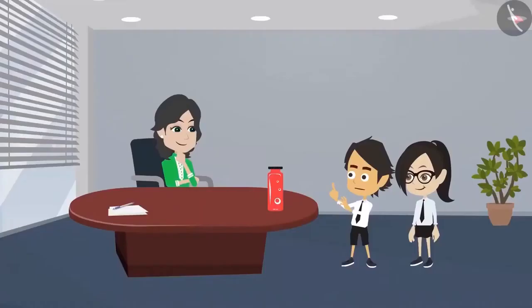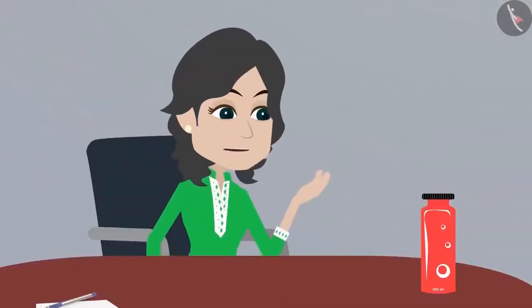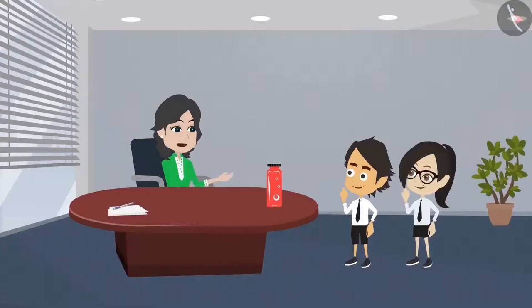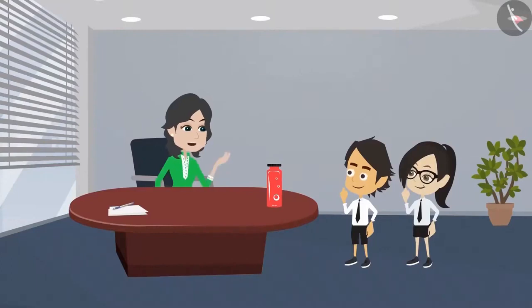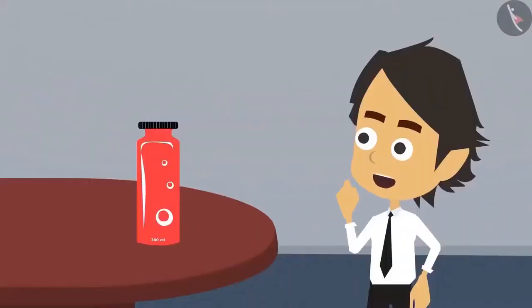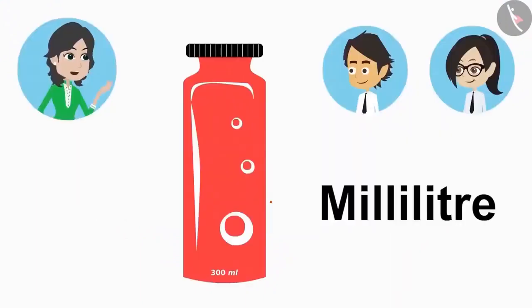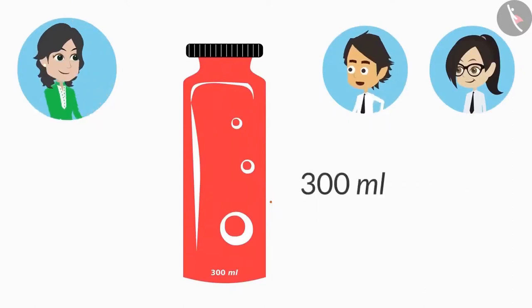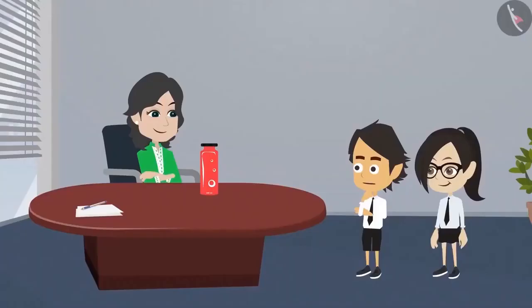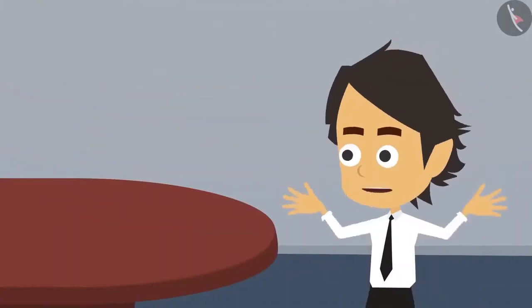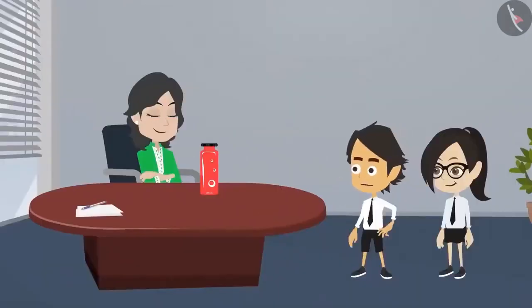This bottle has buttermilk and we want to divide this into two halves between us. This buttermilk is a liquid. Liquid is measured in litre or millilitre. Look, it must be written somewhere on this bottle — how many millilitres of buttermilk does it contain? Here it says that this bottle has 300 millilitres of buttermilk. We use ml to write millilitre. Half of 300 ml will be 150 ml, which means if we divide the buttermilk into two equal halves, we both will get 150 ml each.